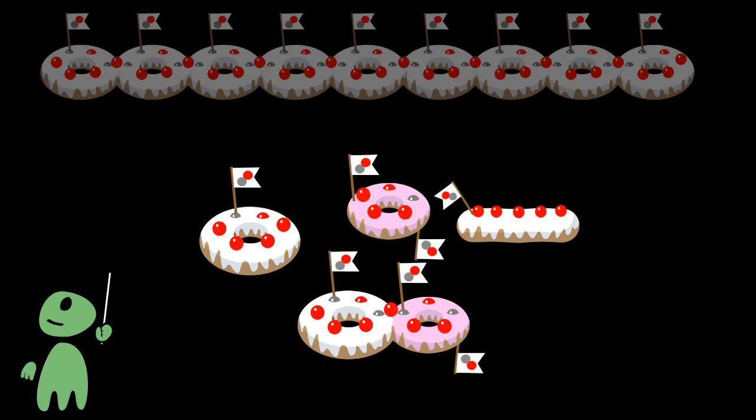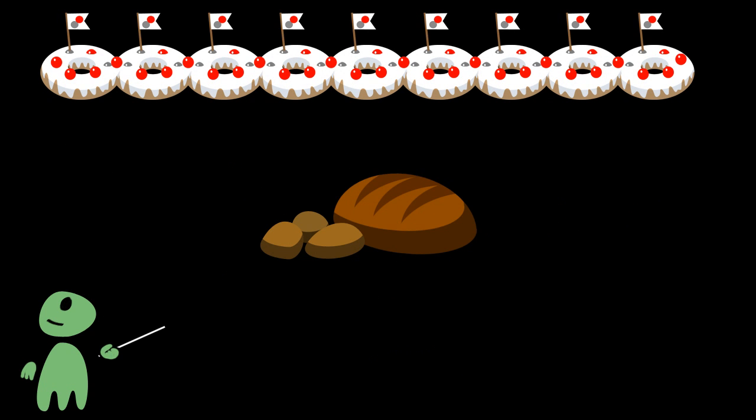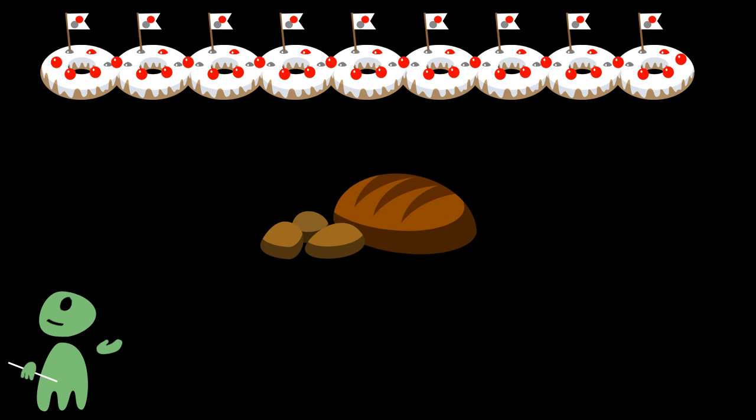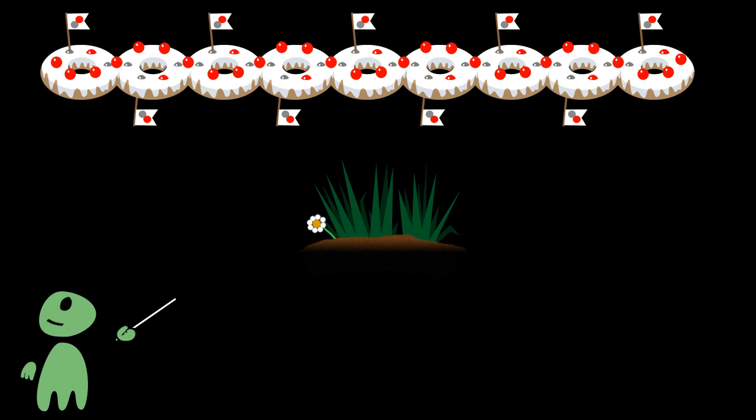For example, when you create a glucose chain and put all the little flags in the same direction, you get starch, a good energy source. You find it, for example, in bread. But when you alternate the orientation of the flags, you get cellulose, which is indigestible for earth creatures.